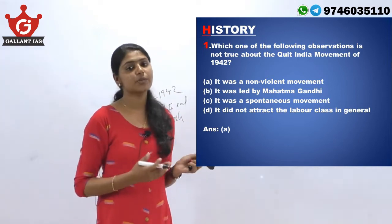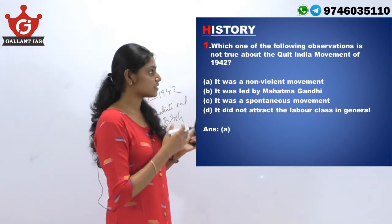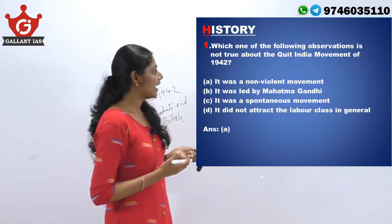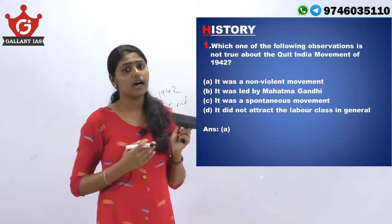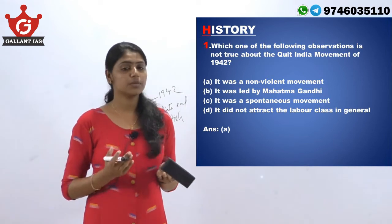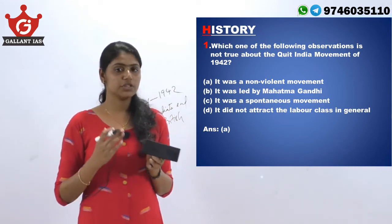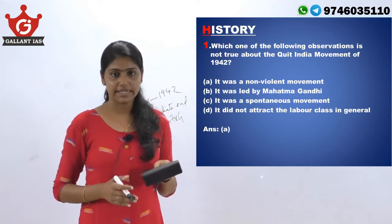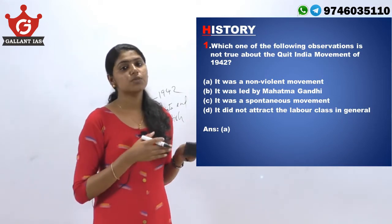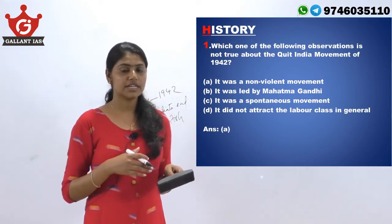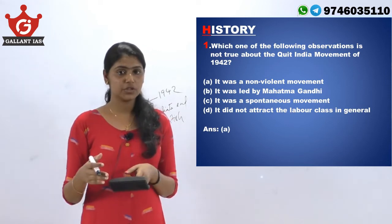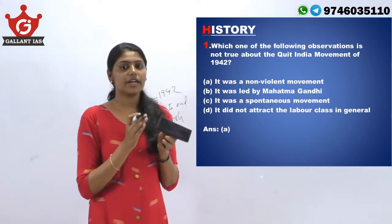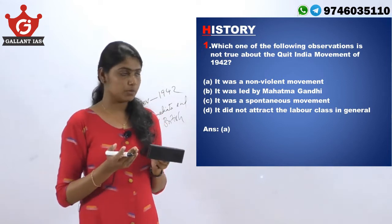The civil disobedience movement was also launched along the lines of the Quit India movement, which was led by Mahatma Gandhi. The British government was not in a position to negotiate and arrested all the prominent leaders. Eventually the movement was in the hands of the younger generations and militant groups, and the Quit India movement finally turned out to be a violent movement.